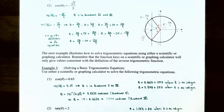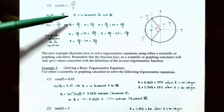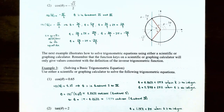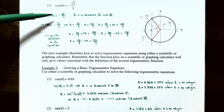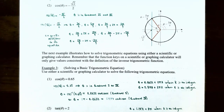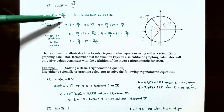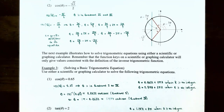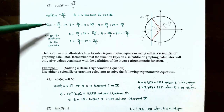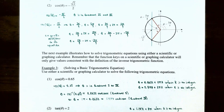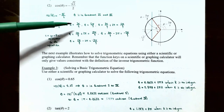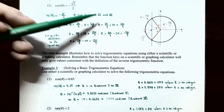Now solve cos(θ) = −√2/2. Since cosine is negative, θ is in quadrant 2 or 3. The period of cosine is 2π, so we find solutions between 0 and 2π: θ = 3π/4 (quadrant 2) and θ = 5π/4 (quadrant 3), since cos(3π/4) = cos(5π/4) = −√2/2.